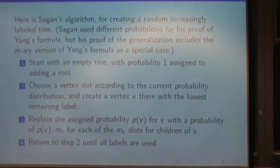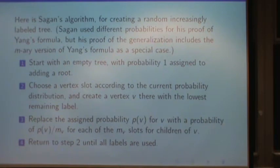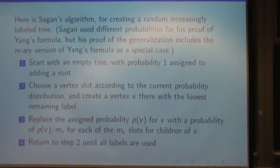Sagan's algorithm is distinguished from ours by generating a random, increasingly labeled tree. For his direct proof of Yang's result, his probability weights were different, but the generalization includes the M-ary version of Yang's formula as a special case.